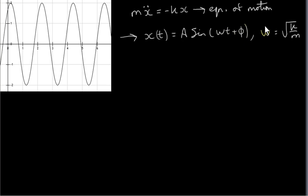We saw that ω, the coefficient of t, is the square root of k over m, where k is the spring constant and m is the mass attached to the spring.